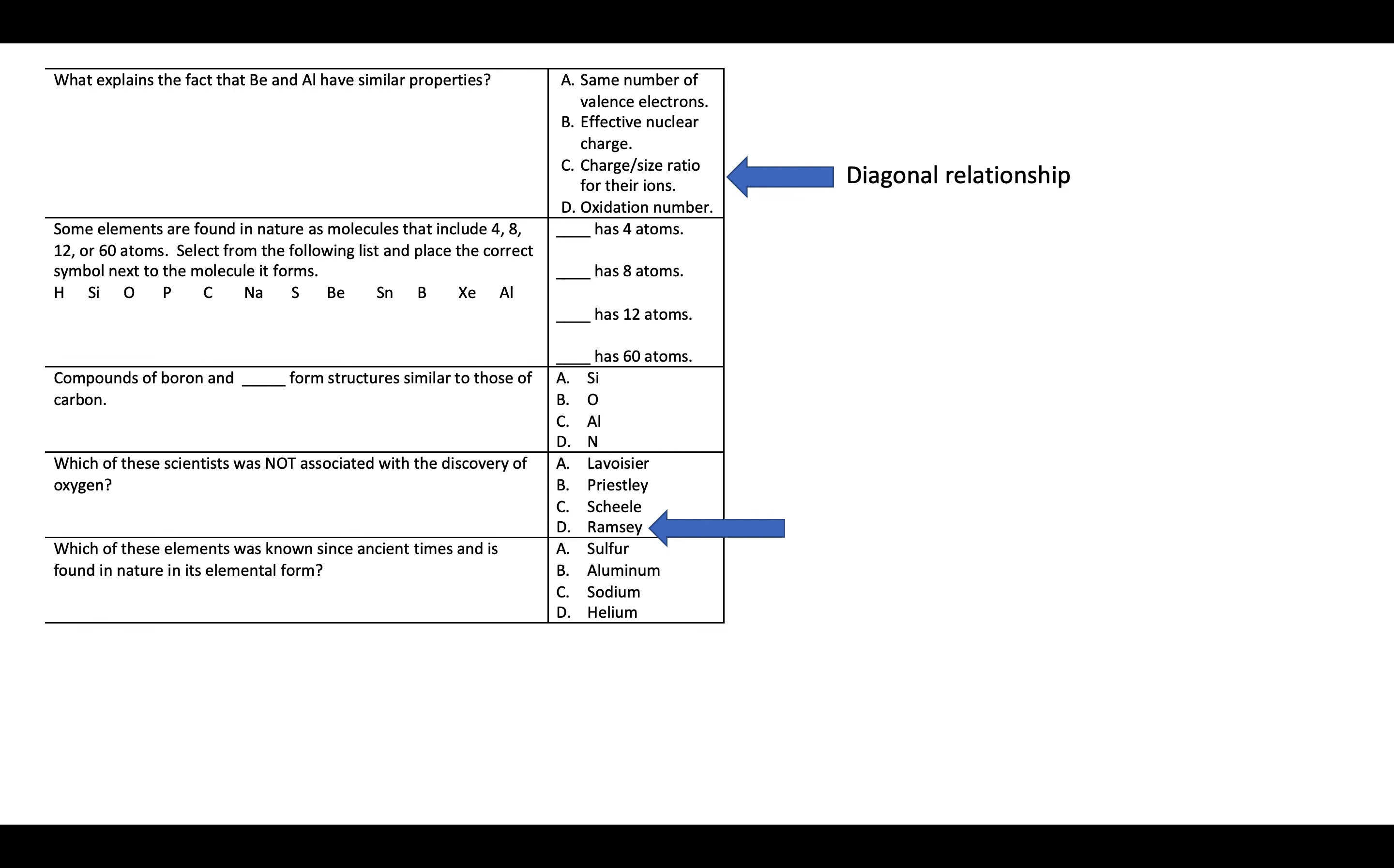An element known since ancient times and found in nature in its elemental form, that's sulfur. Aluminum certainly prevalent, but it wasn't isolated as a compound until we were able to use an electrochemical method. Same thing with sodium, helium, recent discovery, based on its spectrum by looking at the sun.